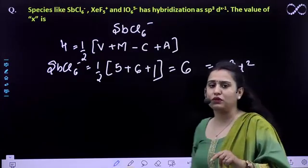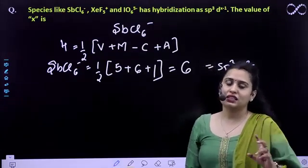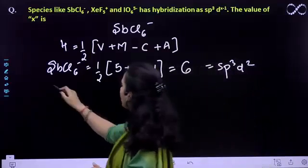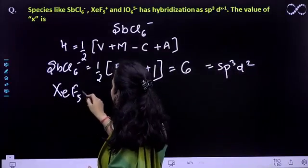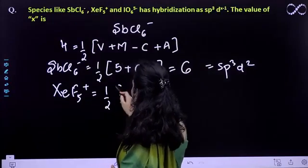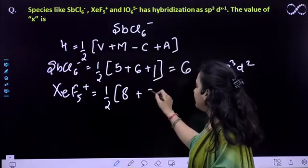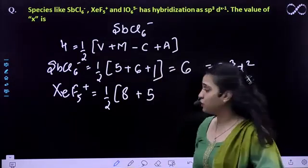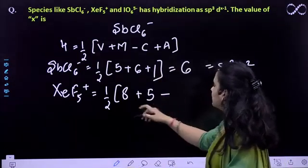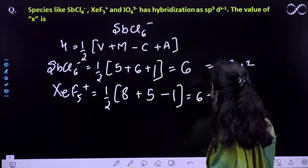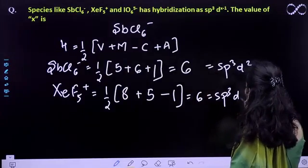Now if you are sure about this, you can do this question and you'll find the value of x. But if you want to see whether all have the same or not, then for XeF5⁺, half of 8 electrons in the outermost shell of xenon, plus 5 fluorines are attached, minus the positive charge is 1. So this will also come out to be 6, and it is sp³d².